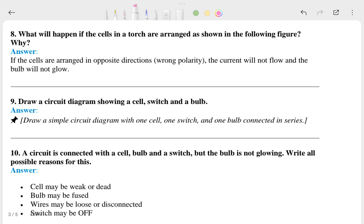If it is clear, let's talk about the eighth one. What will happen if the cells in the torch are arranged as shown in the figure, and why? This is the answer. Draw a circuit diagram showing a cell, switch, and a bulb. This is the answer.